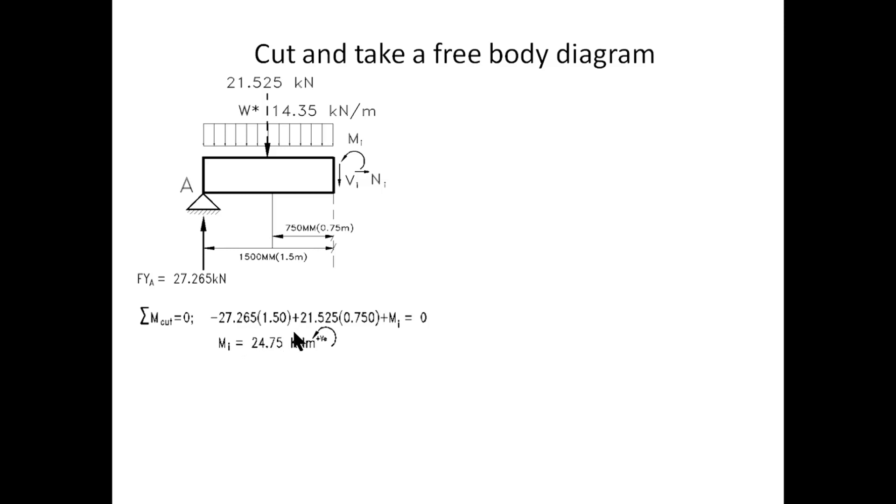And then we add 21.525 multiplied by 0.75 and that is positive because it's going anti-clockwise. Plus MI, MI is going anti-clockwise and that's why we said plus. All of that is equal to zero therefore the internal moment MI is 24.75 kilonewton meters and the answer again turned out to be positive which means the anti-clockwise direction is correct of what we have assumed.